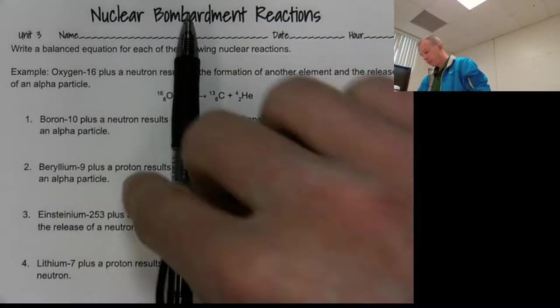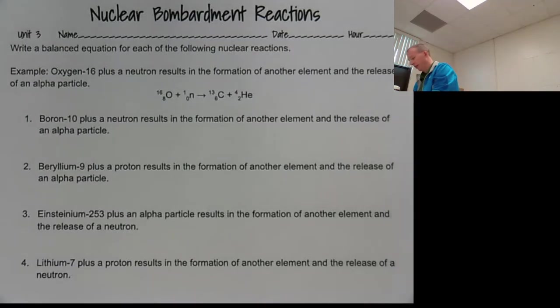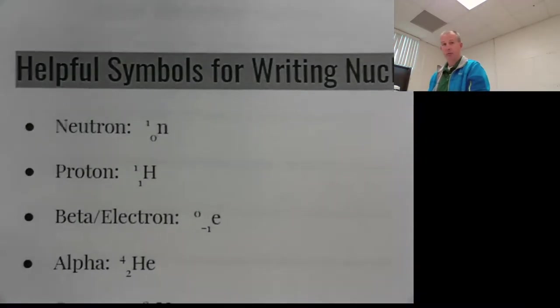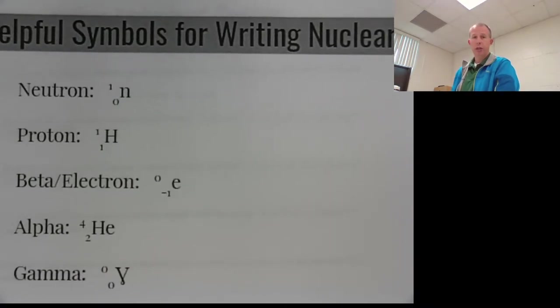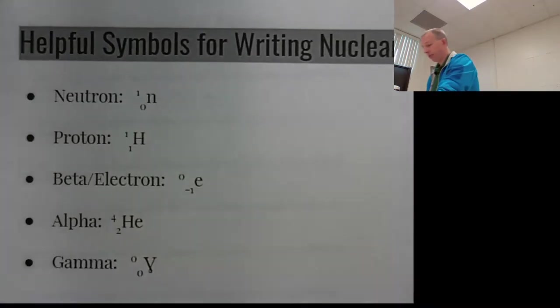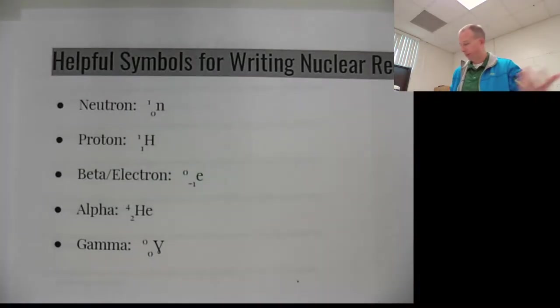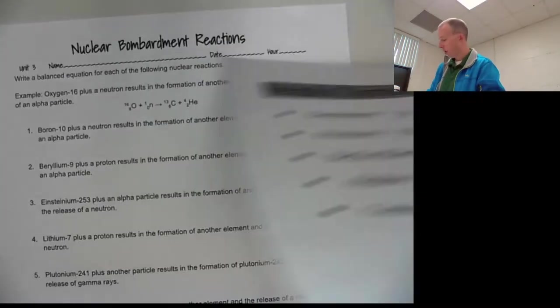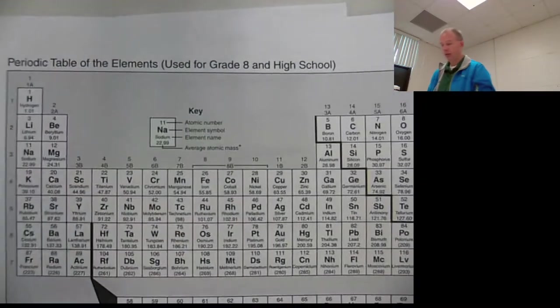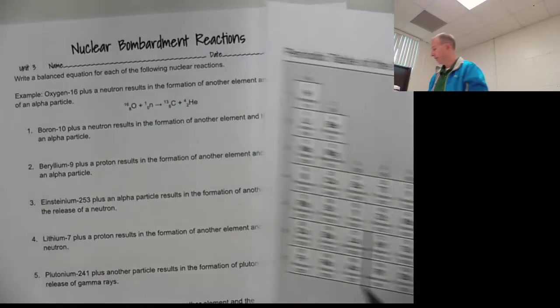So something that I recommend you have. This is on canvas, it's available, and it's in the PowerPoint slides as well. It's this really helpful thing, this cool worksheet, just showing you the helpful symbols for writing out nuclear reactions, because this is going to matter now. And then also again, your handy periodic table, you want to have that available at all times.